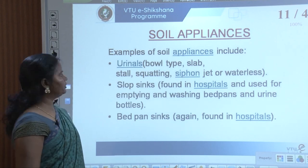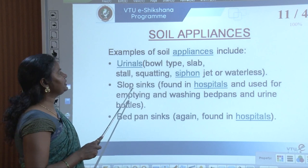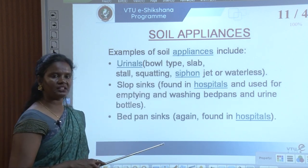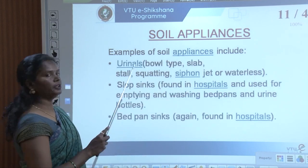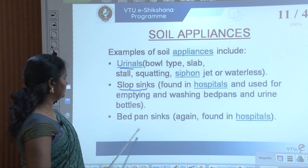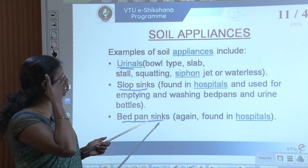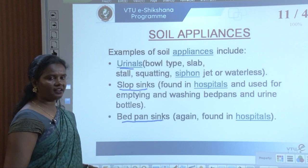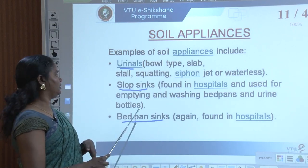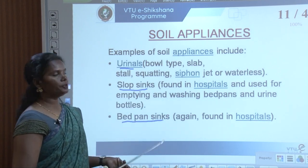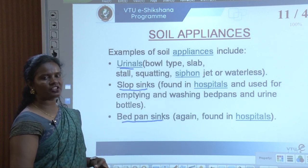Examples of soil appliances also include urinals: bowl type, slab, stall, squatting, siphon jet, or waterless. Waterless is a newer concept that people are trying to adopt for all appliances. Urinals are also considered soil appliances — not just toilets and bidets. Other soil appliances include slop sinks and bedpan sinks. Please do not confuse the kitchen sink with these — slop sinks and bedpan sinks are different.